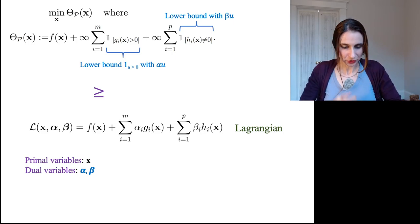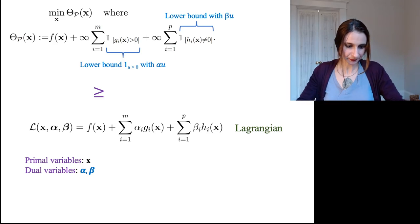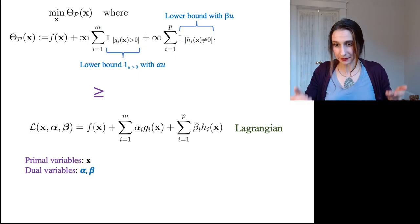Okay, good. So now we've established that the Lagrangian is a lower bound for the primal objective theta p. The primal variables are called x, the dual variables are called alpha and beta.